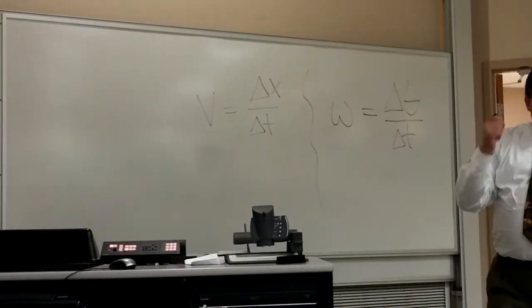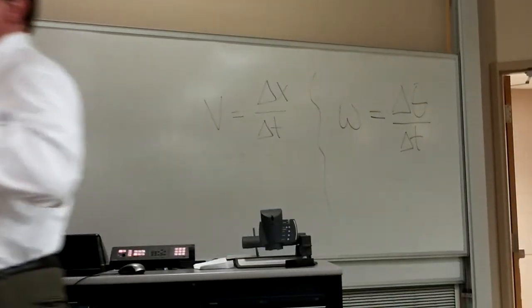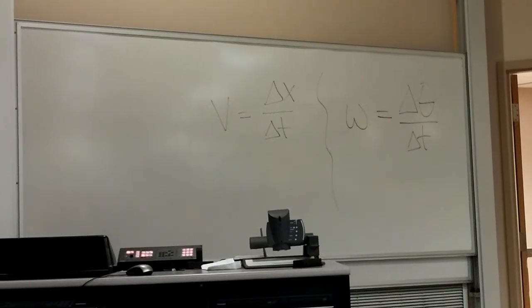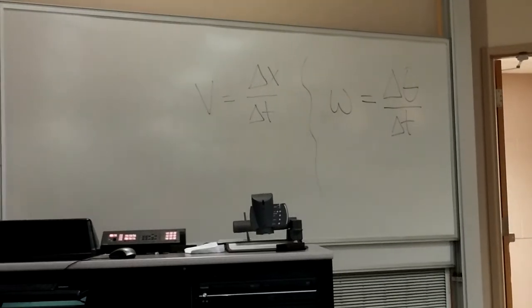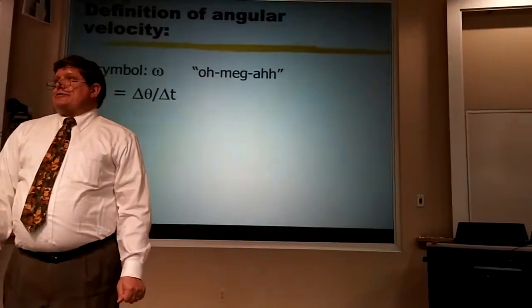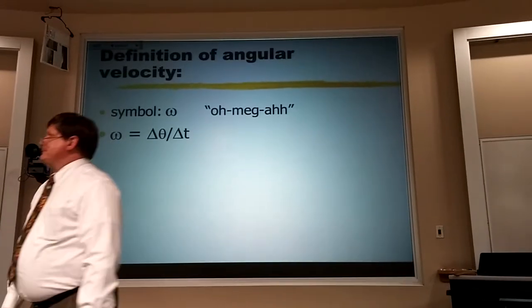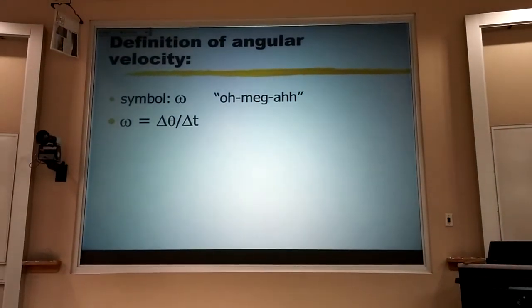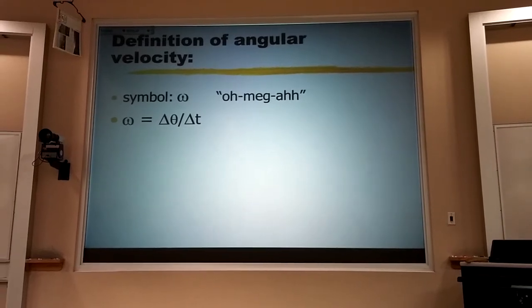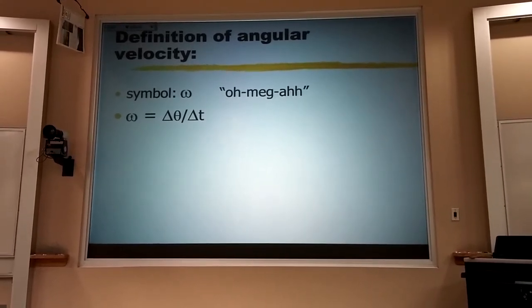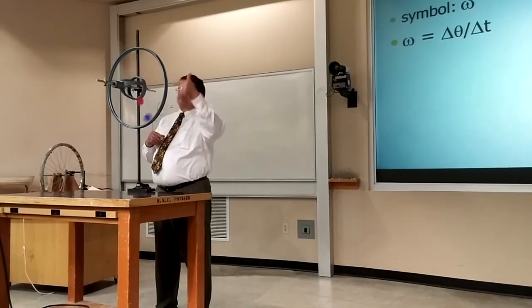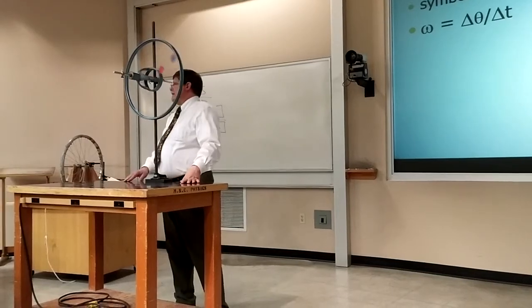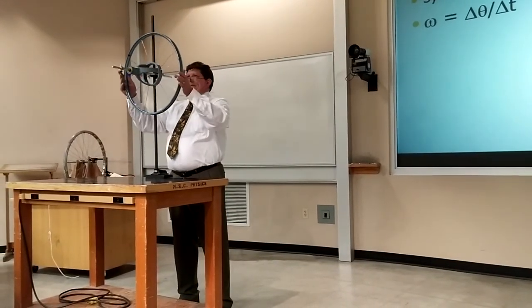Now, the big difference between these two equations is this: if I start here, go right, then go left, and come back to my starting place, my delta x is zero. But when we deal with angle, we don't zero it out each time we get back to our starting position. If I start here and go around once, that's 2 pi, then 4 pi, 6 pi, 8 pi, 10 pi — I just keep on counting. I don't zero out.